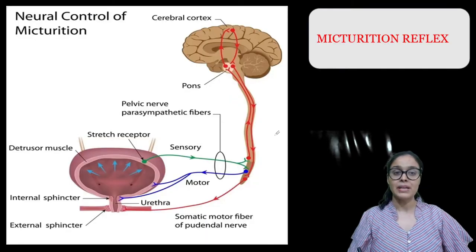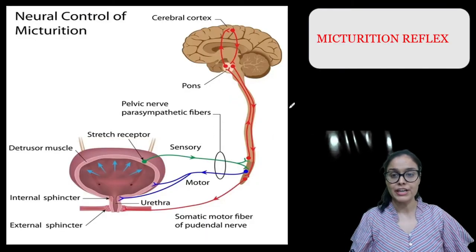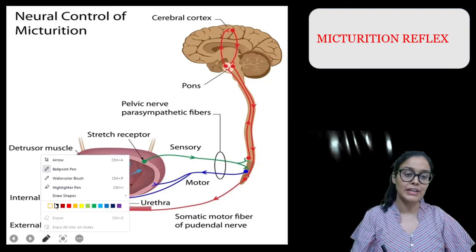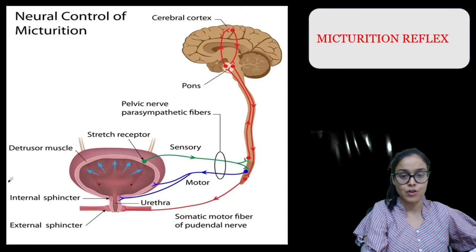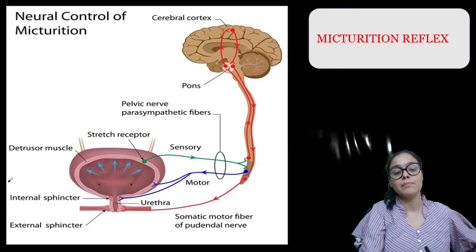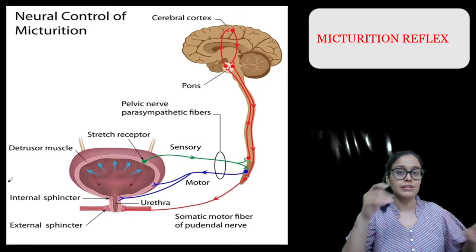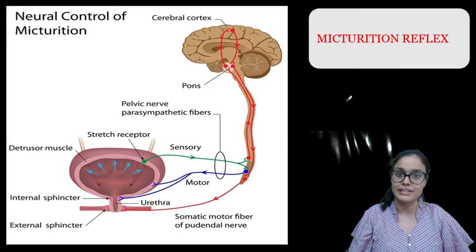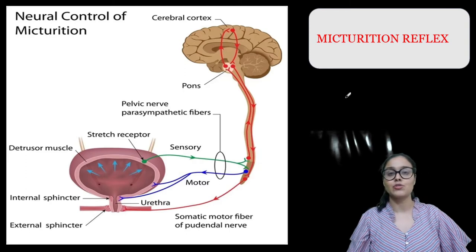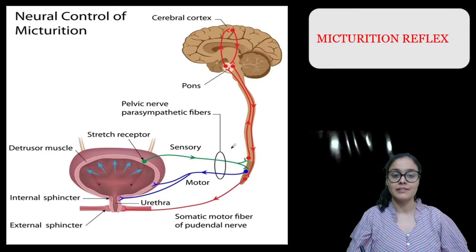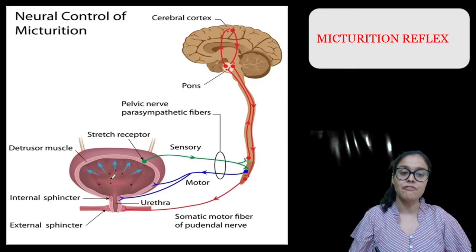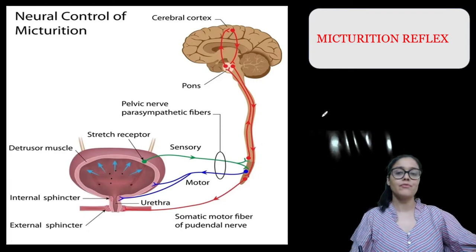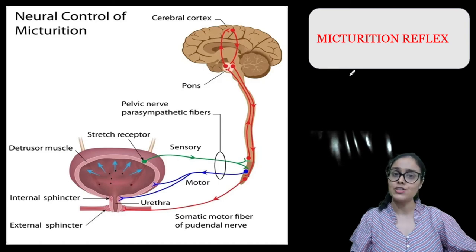Let's start now. When we talk about micturition, we know that micturition reflex means to release out the urine. Urine formed by the nephron will come from the nephron to the renal pelvis, and the renal pelvis puts all the urine into the ureters. Ureters carry it to the urinary bladder, and then the urinary bladder fills with urine and excretes it out. So micturition means release of urine.